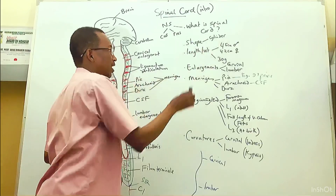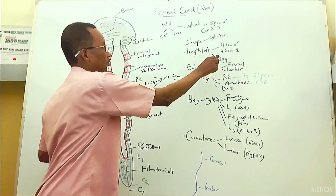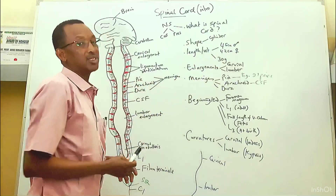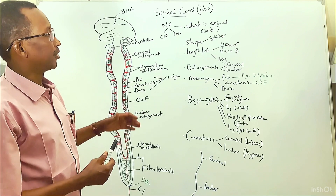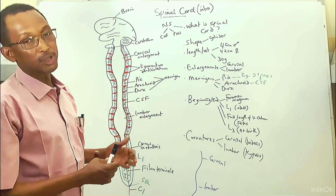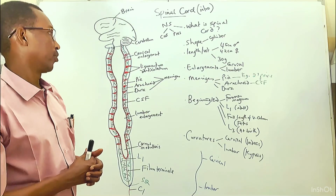The total length of the spinal cord in an adult is approximately 45 centimeters in males and approximately 42 centimeters in females, and its weight is approximately 30 grams.